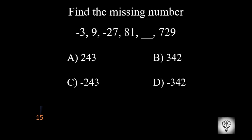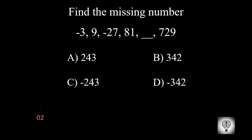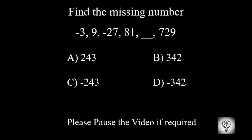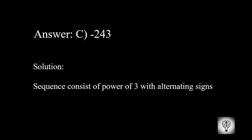Find the missing number. Please pause the video if required. The correct answer is minus 243. The sequence consists of powers of 3 with alternating signs.